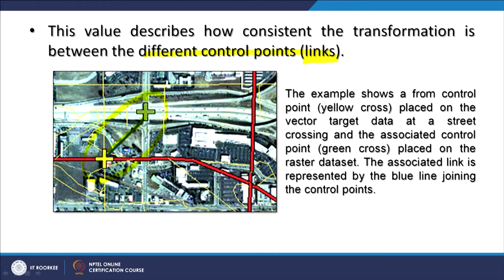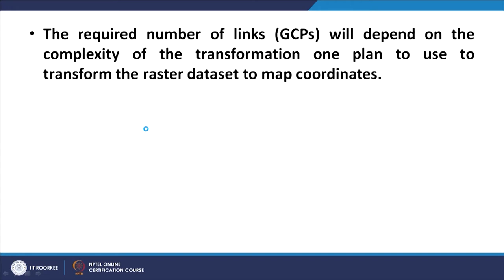This RMS error describes how consistent the transformation is between different control points — also called links in ArcGIS — between the slave map and master map. For example, a yellow cross is placed on vector target data at a street crossing, and a green cross is placed on the raster dataset at the associated control point; the link is represented by a blue line joining them. If any point shows a large RMS error graphically, you can see it and rectify the issue there. Error propagates in GIS, so after each operation check for errors and correct them before proceeding.